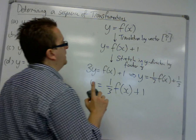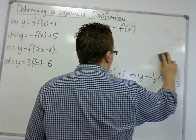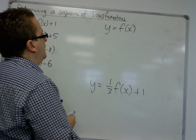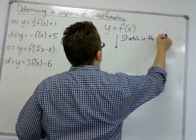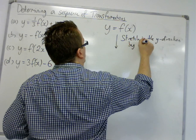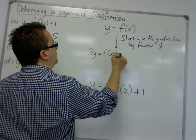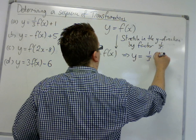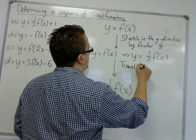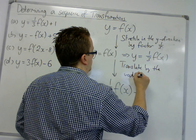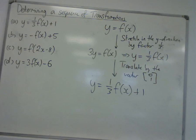And remember, in some cases, the order matters. So, I needed to have done the stretch first. So, if we have the stretch in the y direction by a factor of one-third, then y gets replaced with three y. So, I've got y is equal to one-third f of x. And then, I translate by the vector 0, 1. And that will get me to one-third f of x plus one.